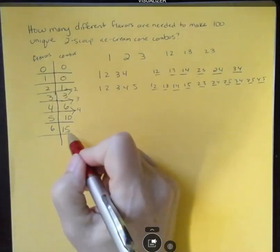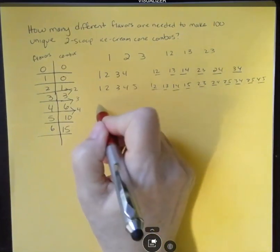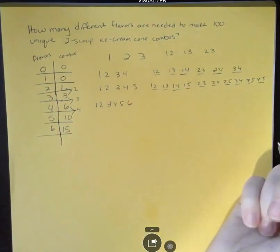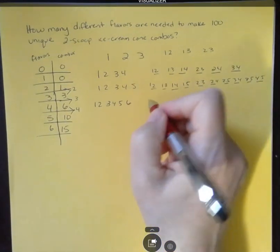If that's true, then I would see that one, two, three, four, five, six should have 15 combinations. So let's see.